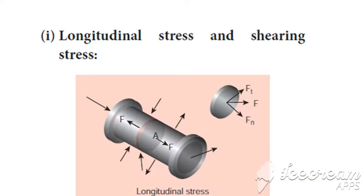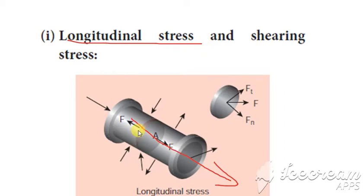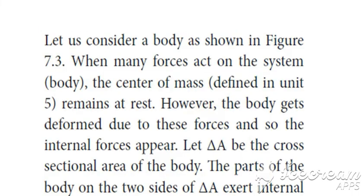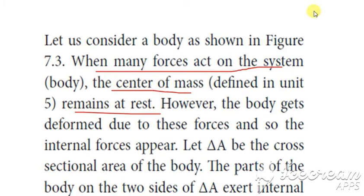Now we will see the types of stress one by one. First is longitudinal stress. Longitudinal stress occurs when there is any change in the length of the body. There are normal forces and also tangential forces acting on a body. When many forces act on the system, the center of mass remains at rest.